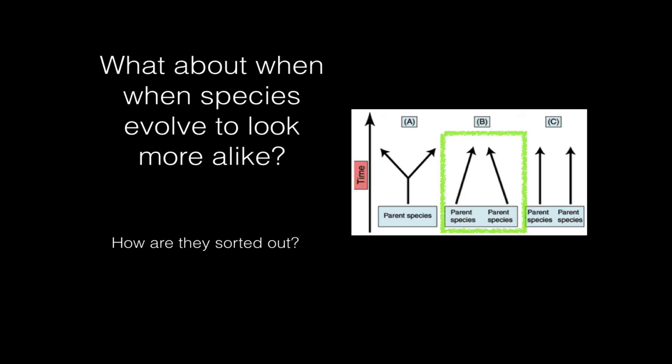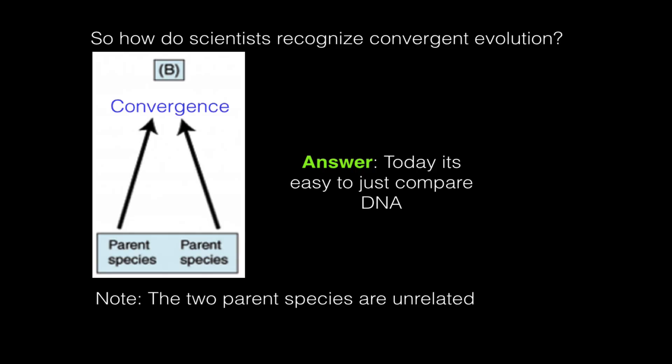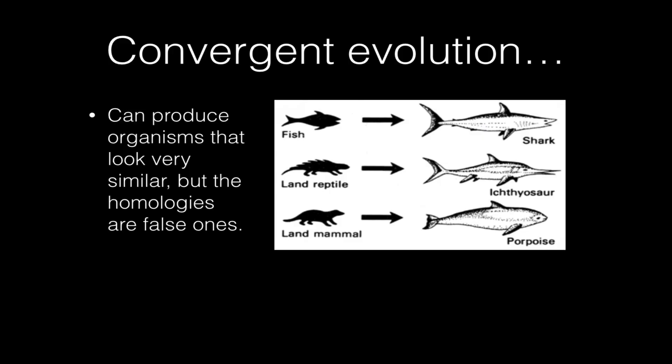Now what about when species evolve to look more alike? How do we sort these out? Because this might lead a casual observer to think two organisms that are not really related to each other actually are. So convergence is when two parent species, which are not related, evolve to look more alike. The simple answer to this question today is you just compare the DNA. You do that analysis that you get from gel electrophoretic comparisons of DNA, and you can quickly see who's more closely related to who and who isn't.